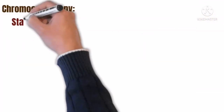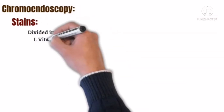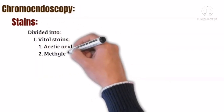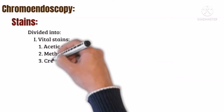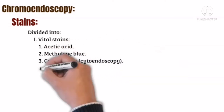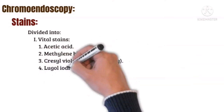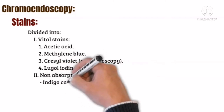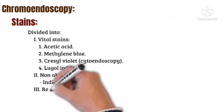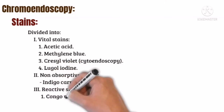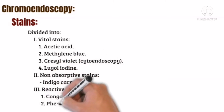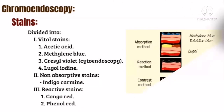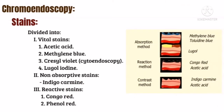Chromoendoscopy is divided into three groups. The first group is vital stains, which include acetic acid, methylene blue, cresyl violet, and Lugol's iodine. The second group is non-absorbative stains, which include indigo carmine. The third group is reactive stains, which include congo red and phenol red.